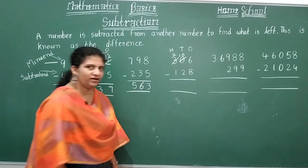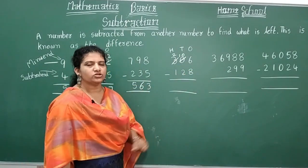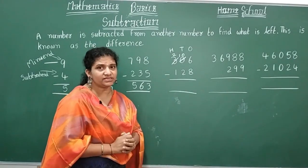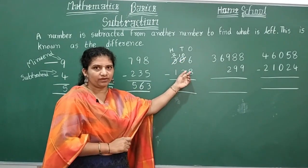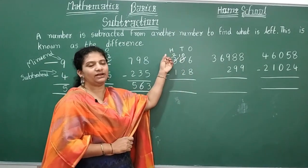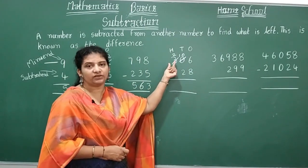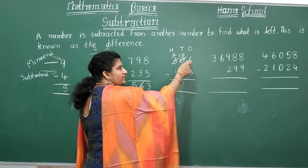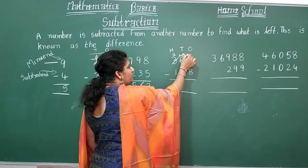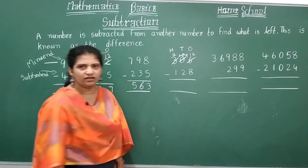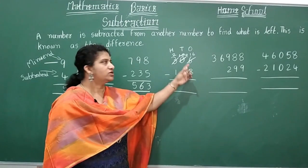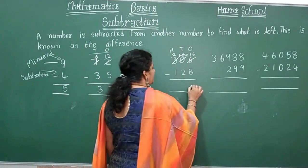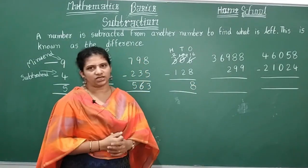Now this ten in the tens place: since six in the ones place still cannot subtract eight, borrow one from this ten. The ten becomes nine and the six becomes sixteen. So in the ones place: sixteen minus eight equals eight. Be careful and understand this step carefully when borrowing across a zero.